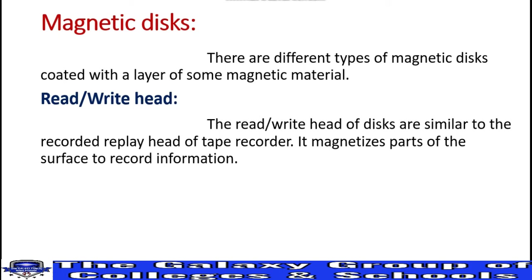The read/write head magnetizes part of the surface of the disc. We have a disc made of magnetic material — for example, zinc oxide or iron oxide. What is the magnetic part? We use it for recording information; we record information on it.